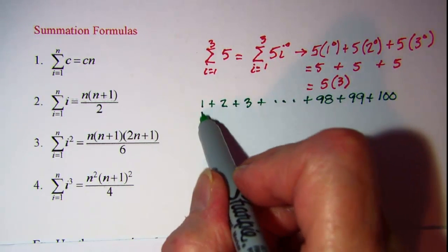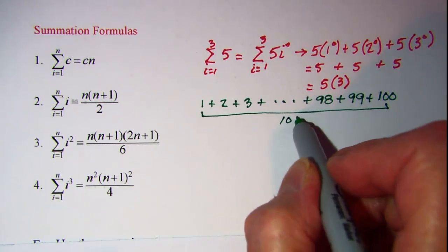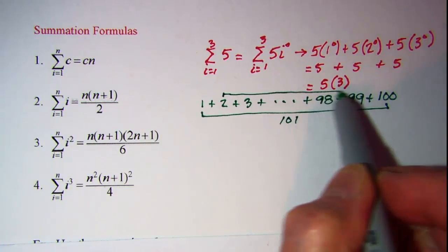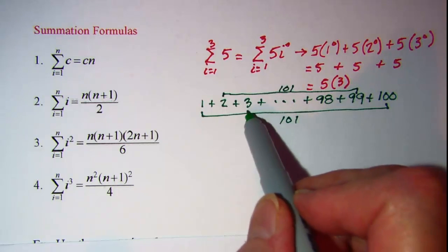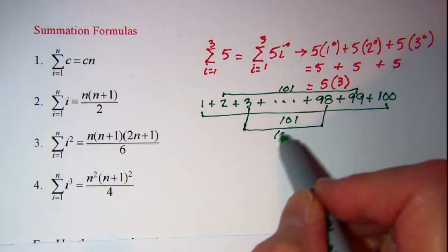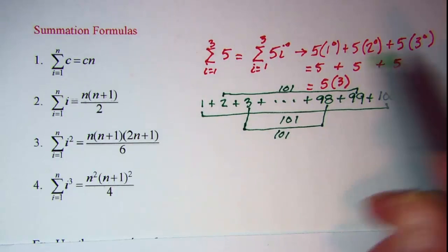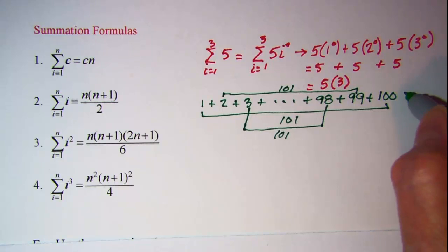He matched up the first and the last and got 101 when he added those. And then he added the second one and the second to the last and he got 101. And he took the third one and the third from the last and got 101. And so he noticed that he would have 50 of those number pairs.